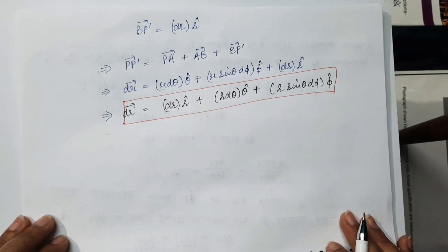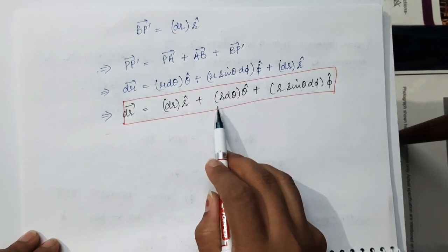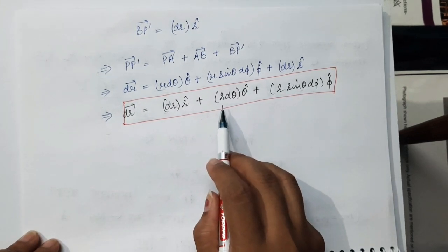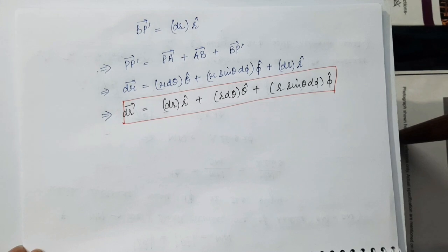In the next lecture, we will derive the velocity vector and acceleration vector in terms of spherical polar coordinates. This expression obtained by the graphical method is the same as the expression we already obtained during the mathematical method. This topic is very important, most important from an examination point of view.